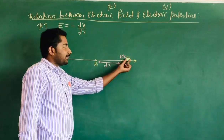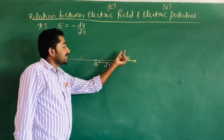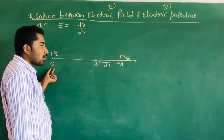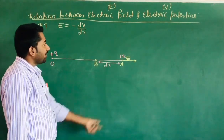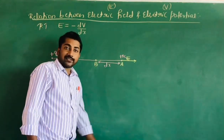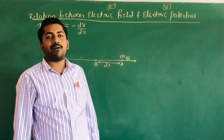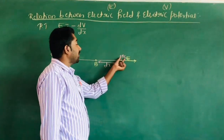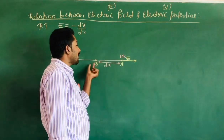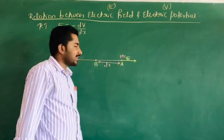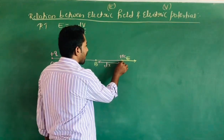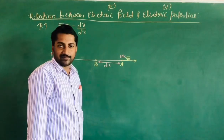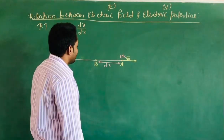E is the electric field at point A due to the point charge Q at point O. Here I consider one coulomb of unit positive charge moving from point A to B through a certain distance dx. A certain amount of work done is produced here.